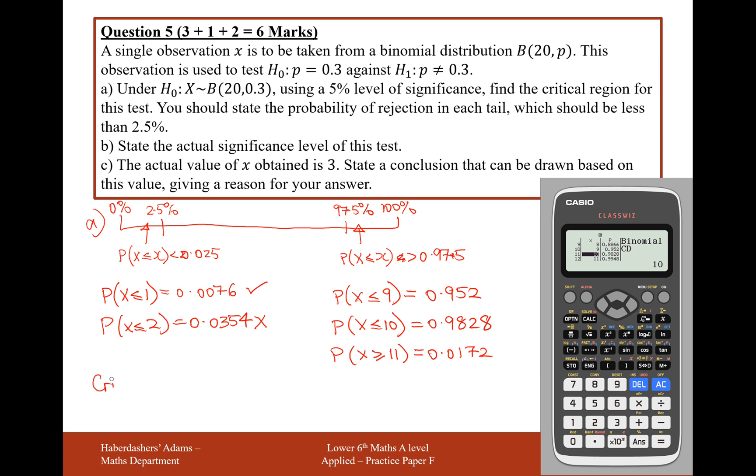So the critical region here contains all of the values for flipping a coin and getting heads, all of these values for x, where we would be suspicious that our probability is not 0.3. In this case, it's the values for x that is less than or equal to 1, or it's the union of all of the values of x that are greater than or equal to 11.